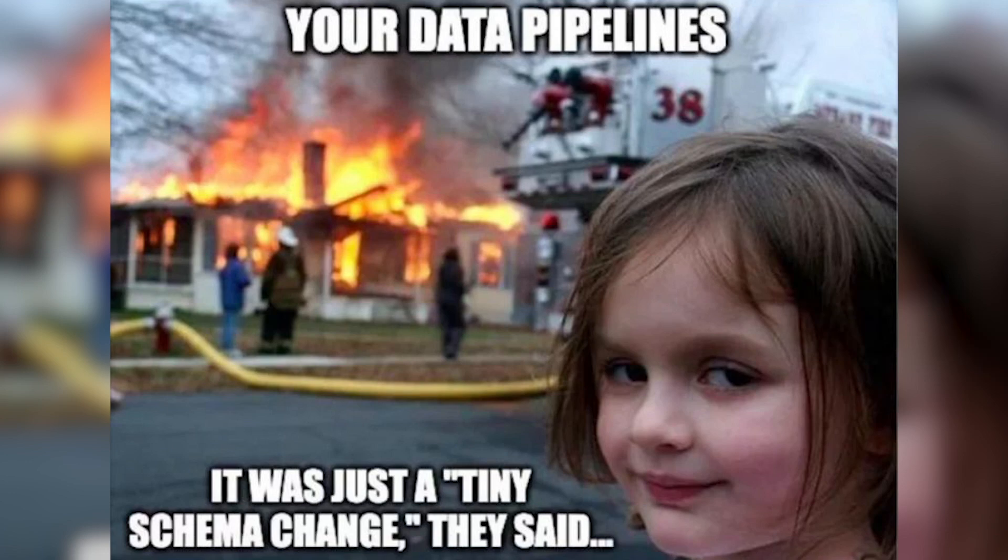Now let's talk about two words that have taken the data world by storm, at least for the last month, because data contracts is somewhat connected to them: schema changes. At most companies, especially if you're working at a company that builds applications, someone needs to change a table because they need to add new functionality, or maybe they're changing or removing features. So they either add, remove, or change columns that you currently pull data for — and now more than likely that breaks your pipeline somewhere.